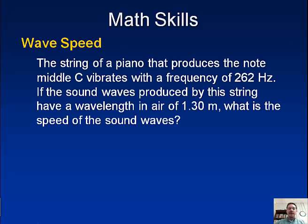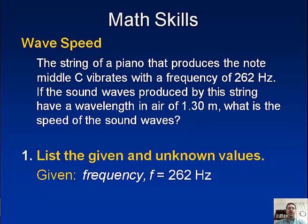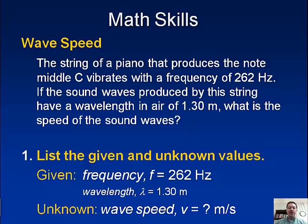So let's look at an example. Strings of a piano that produces the note middle C vibrate with a frequency of 262 hertz, or 262 cycles per second. That's another way to represent hertz or vibrations per second. Different ways you can say the same thing. If the sound waves produced by this string have a wavelength in the air of 1.3 meters, what's the speed of the sound wave? So we're given frequency and wavelength. So we're going to list our given values. Frequency is 262 hertz. Our wavelength is 1.30 meters. And we want to know the wave speed.